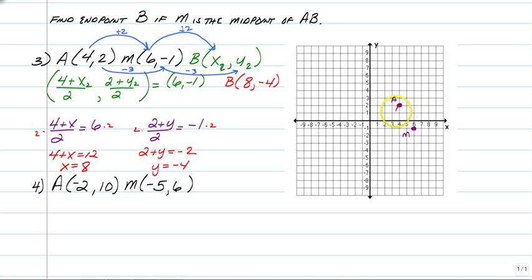So to get from A to M, you would have to go down 3, right 2. So you just have to go down 3 more, right 2 more. Check it out. You're still at 8, negative 4.